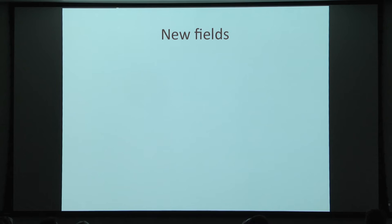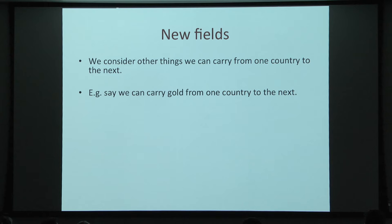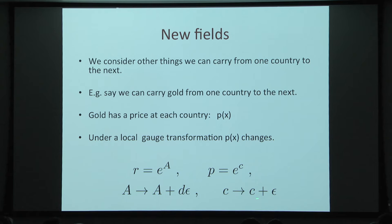In the case of pure electromagnetism — the case where the only thing you can carry when you go from one country to the next is money — the only relevant things are exchange rates. Now let's discuss new fields. If we have electromagnetism coupled to something else, we'll have new fields, arising when we consider other things that we can carry from one country to the next. Let's say we can carry gold. Gold will have a price at each country, P of x, where x denotes which country we're in. Under local gauge transformations, P of x changes in the usual way. It's convenient to take the log of the price and say that under a local currency transformation, the log shifts.